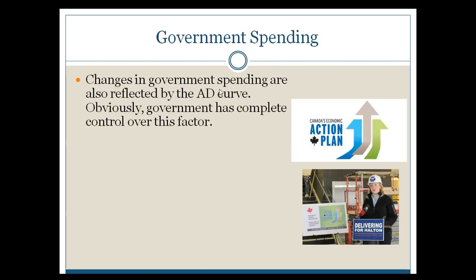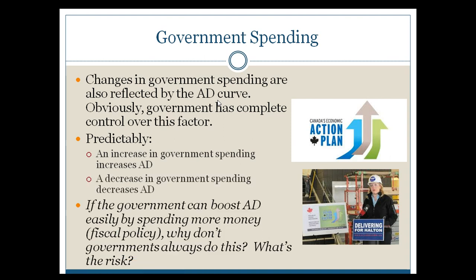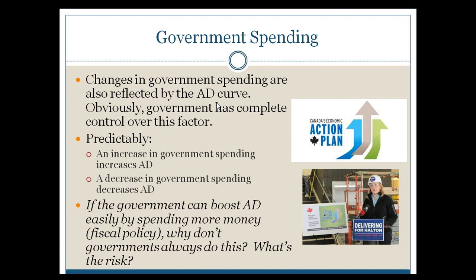Government spending is the third major factor in the GDP equation, and it's a huge factor in terms of how you manipulate aggregate demand to move in a direction you want. Obviously, government has complete control over that factor. Predictably, if you increase government spending, you'll increase aggregate demand. If you decrease government spending, aggregate demand will decrease.